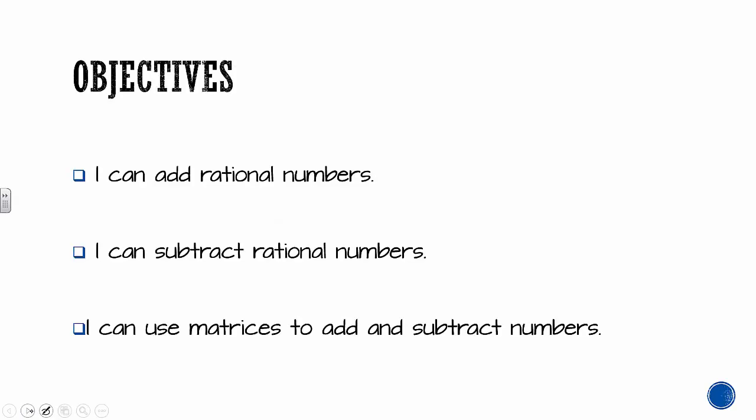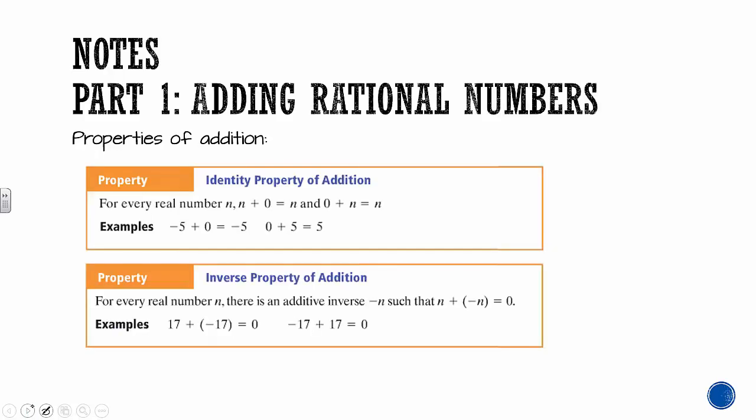Three objectives: by the end of this lesson, you should be able to add rational numbers, subtract rational numbers, and use a matrix to add and subtract rational numbers. Some of these problems are going to seem kind of easy, but for this chapter, we will not be using calculators.